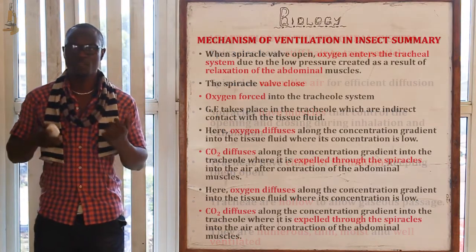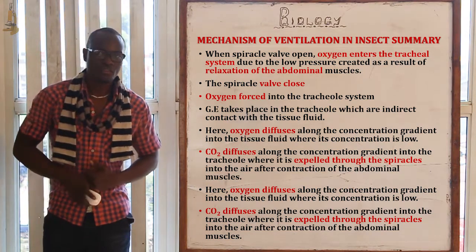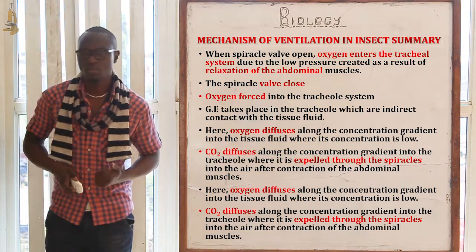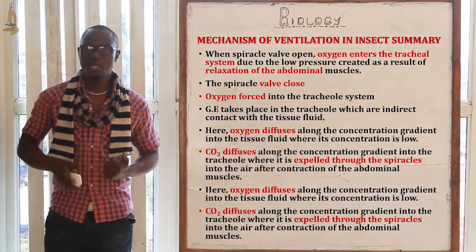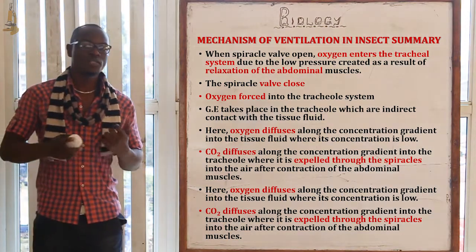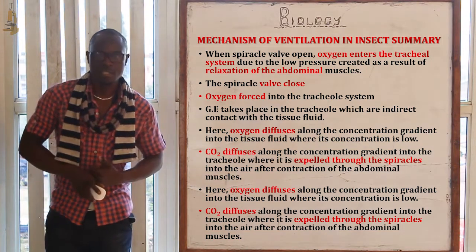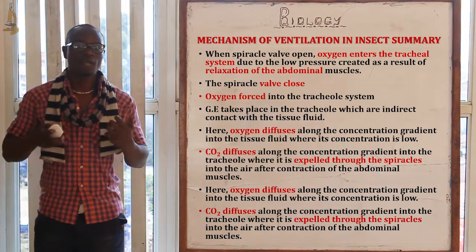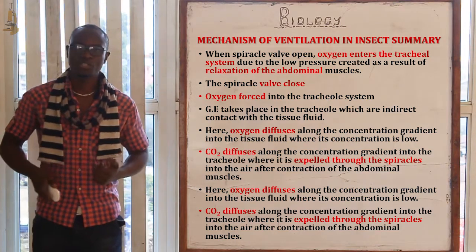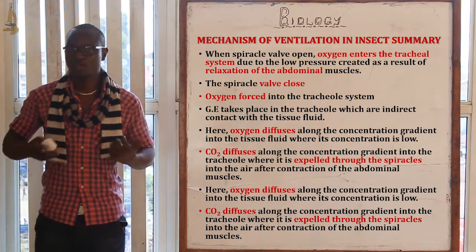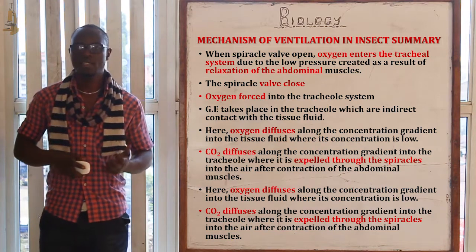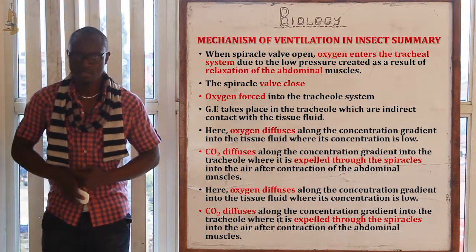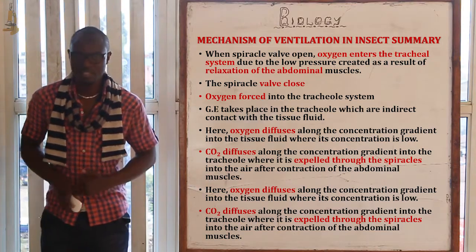Regarding the mechanisms of ventilation in insects: when the spiracle valve opens, oxygen enters the tracheal system due to low pressure created by relaxation of the abdominal muscles. The spiracle valve then closes, and oxygen is forced into the tracheal system where gas exchange takes place in the tracheoles in direct contact with body tissue. Oxygen diffuses along the concentration gradient into the tissue fluid, while carbon dioxide diffuses along the concentration gradient into the trachea and is expelled through the spiracles after the abdominal muscles contract. We will continue with gas exchange in bony fish in the next class.